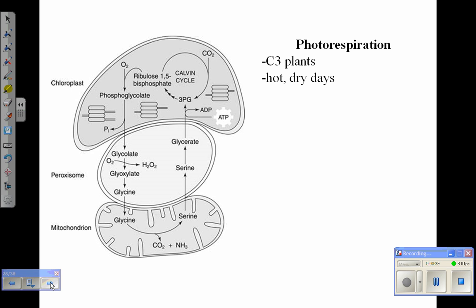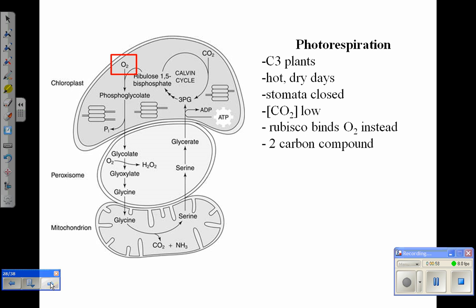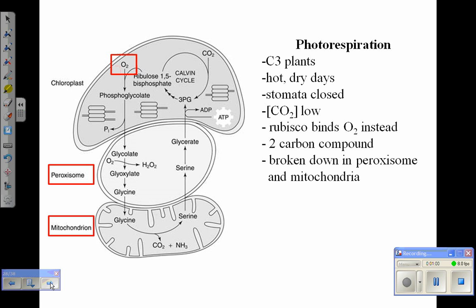Photorespiration sidetracks the Calvin cycle by fixing oxygen instead of CO2, creating a two carbon compound that cannot be used to produce energy in the cell. The two carbon compound gets broken down in the peroxisomes and the mitochondria.